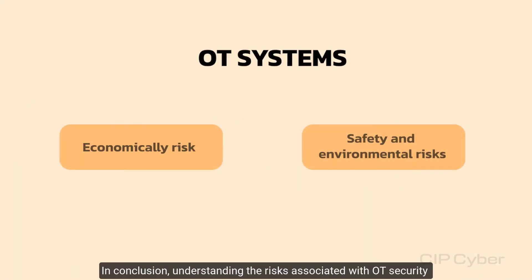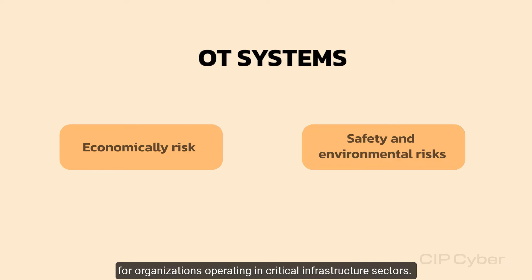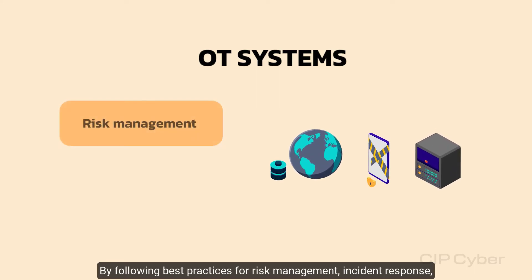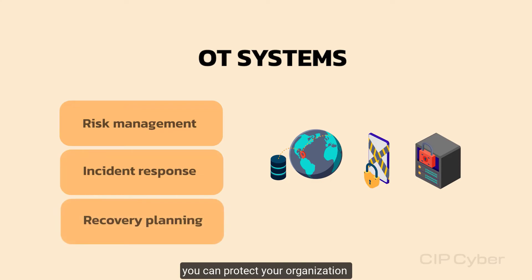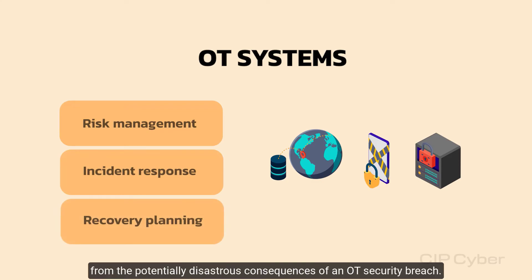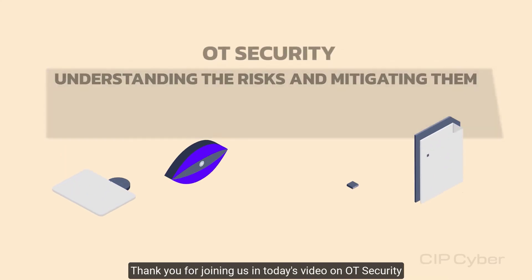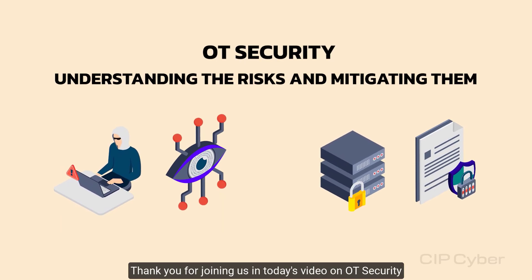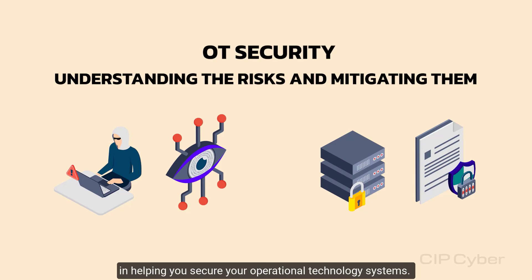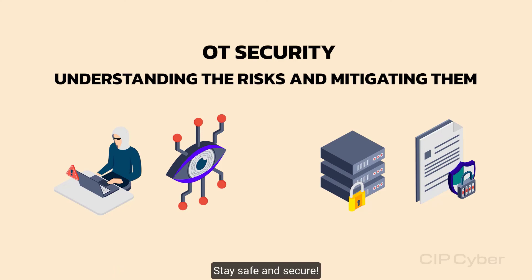In conclusion, understanding the risks associated with OT security and implementing robust measures to mitigate them is crucial for organizations operating in critical infrastructure sectors. By following best practices for risk management, incident response, and recovery planning, you can protect your organization from the potentially disastrous consequences of an OT security breach. Thank you for joining us in today's video on OT security. We hope you found this information valuable in helping you secure your operational technology systems. Stay safe and secure.